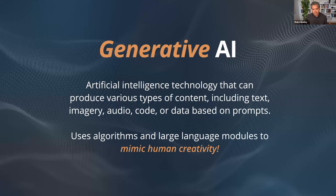The really cool thing about generative AI is that it uses algorithms and large language models — which is what ChatGPT is — to mimic human creativity. Not only is it producing a result, but because it has so much data and understands tones and different ways people talk and come up with ideas, it's actually able to mimic quite a bit of creativity. It's pretty incredible what it's able to do now.